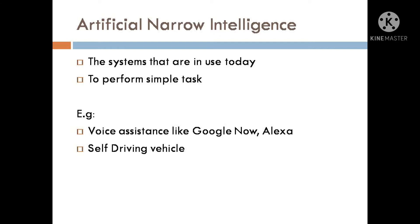These AI systems are only designed to recognize voice and act upon it. Another example can be that of a self-driving vehicle. These systems are designed to drive vehicles on the road. These systems can learn and improve themselves, but they cannot learn new tasks.